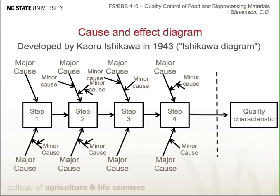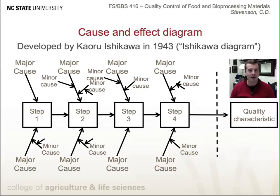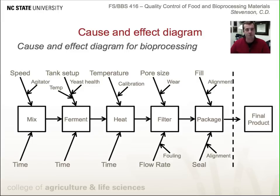Next we have the cause and effect diagram. This was developed by Kaoru Ishikawa in 1943 — sometimes you might hear it referred to as the Ishikawa diagram. These diagrams are useful because you can evaluate the causes that lead to effects and determine whether they lead to positive or negative effects. It's a matter of identifying an effect — some quality characteristic — and then identifying the causes that lead to it.